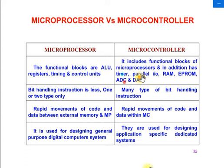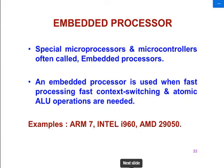If you consider an ATM machine, it gives you step-by-step instructions and using a single ATM card you can perform multiple operations. So these are the special embedded processors. Examples of embedded processors are ARM7, Intel i960, AMD, and Intel processors — all of these are embedded processors.